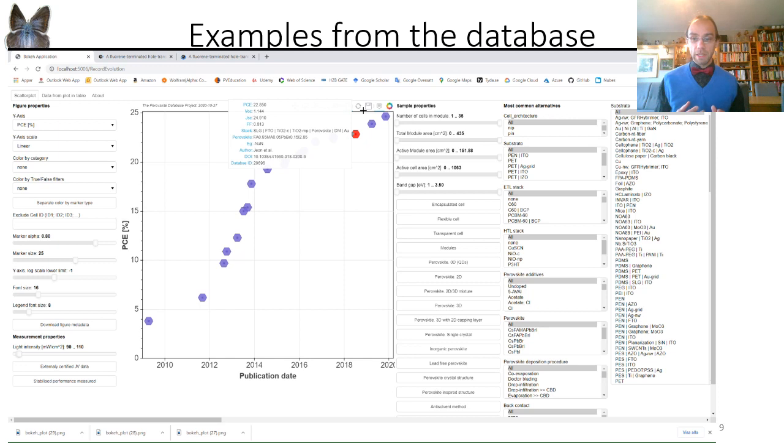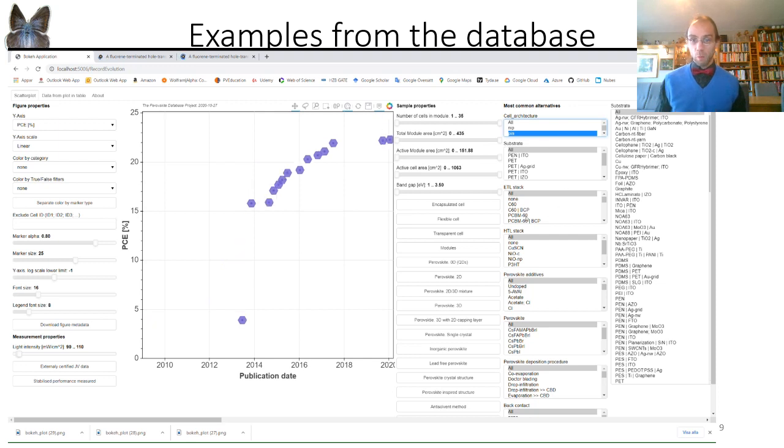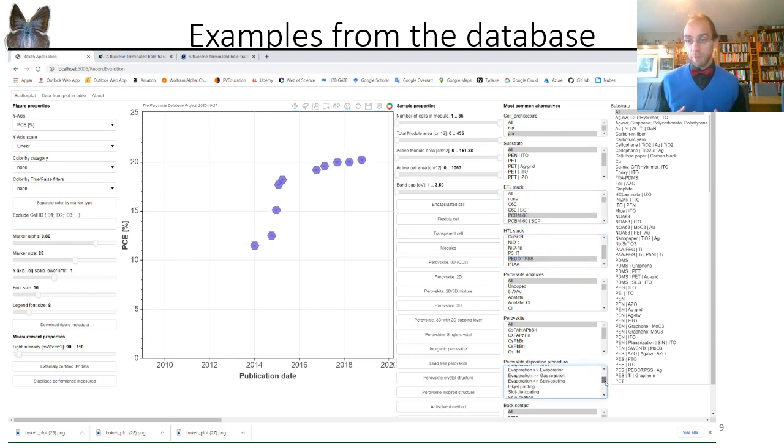But let's say that you aren't primarily interested in the global record, but you are more into, let's say, inverted cells with a PCBM electrode and a PEDOT:PSS hole conductor, and where you want the perovskite to be deposited by spin coating using the anti-solvent method, and where you want the substrate to be flexible. You can get that record trend as easy as that. With one additional button click you can download that figure and are free to use it in your presentation, in your publication, or in your paper.